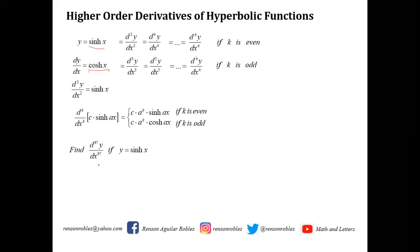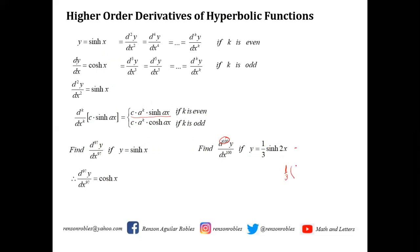For example, the 97th derivative of y = sinh(x): since 97 is odd, the answer is cosh(x). For the 100th derivative of y = (1/3)·sinh(2x): since 100 is even, we use c·a^k·sinh(ax). Here c = 1/3, a = 2, k = 100, giving (1/3)·2^100·sinh(2x).